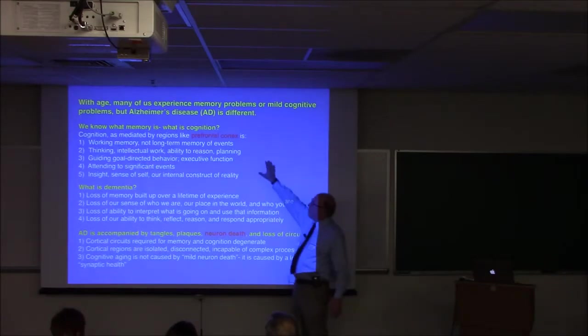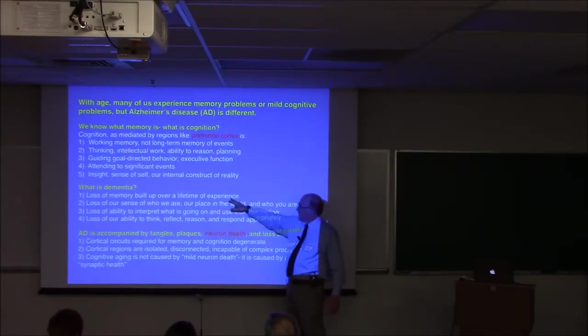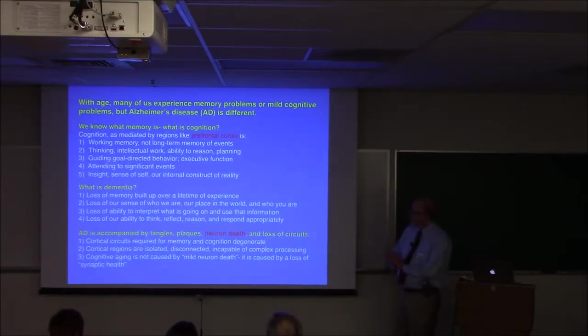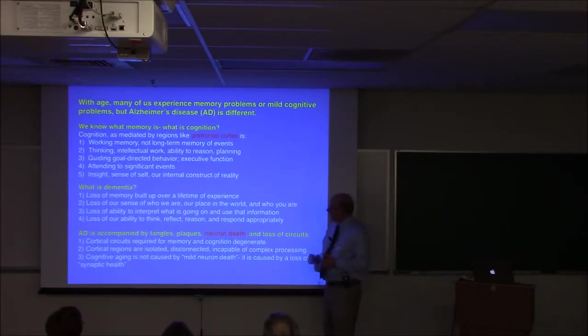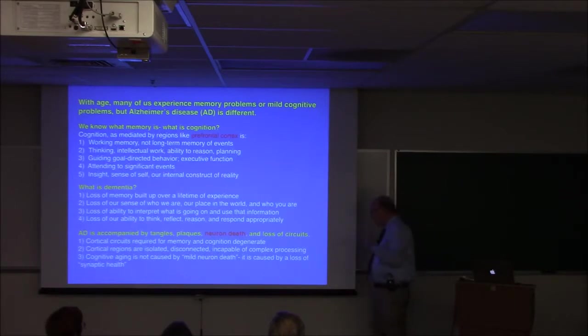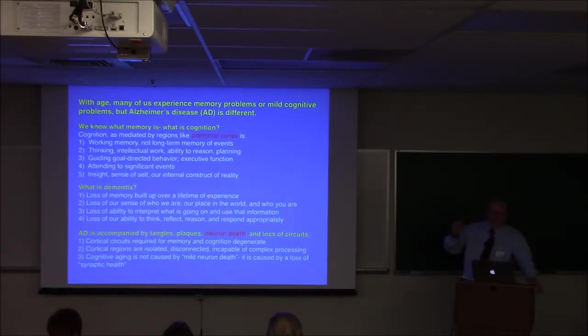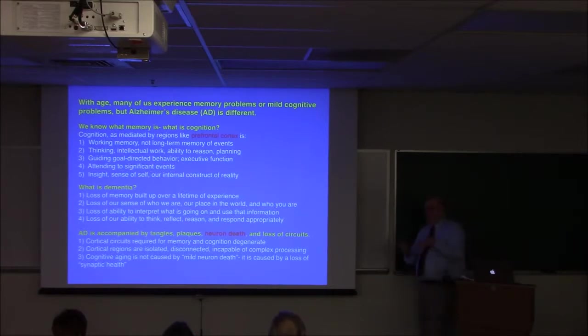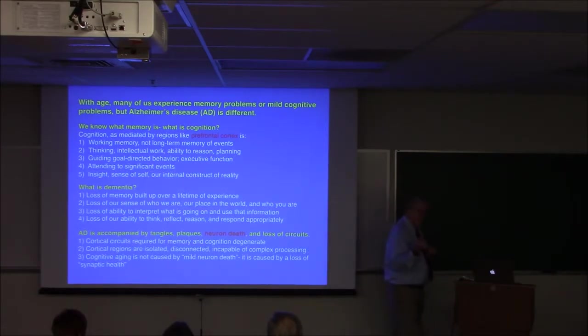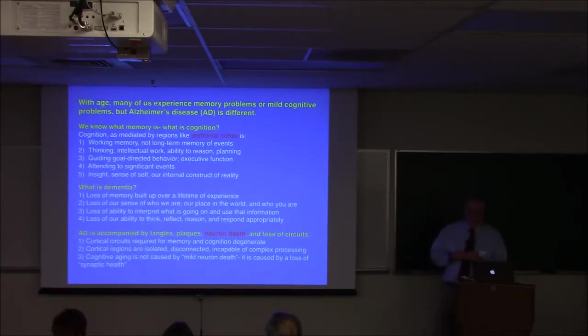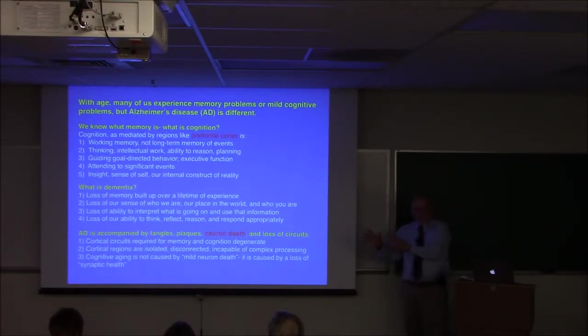So what is dementia? Well, it's the loss of this. It's the loss of memory built up over a lifetime of experience. That's from the hippocampal damage. It's the loss of our sense of who we are, our place in the world, and who you are. That's why at the end you can't recognize your family. The loss of ability to interpret what is going on and use that information. And the loss of our ability to think, reflect, reason, and respond appropriately. This is Alzheimer's disease, which is the main cause of dementia. Now, Alzheimer's disease is accompanied by tangles and plaques. You've probably seen them, and you'll see an example in a minute. And neuron death. This is very, very important. There's extensive neuron death in Alzheimer's disease. It's not random. It's certain circuits that die. We'll talk about that in a minute. And so the neuron death leads to a disconnection of those circuits. In normal aging, and even with significant cognitive decline, you do not have significant neuron death. It's a different process that's going on. So that's very important.